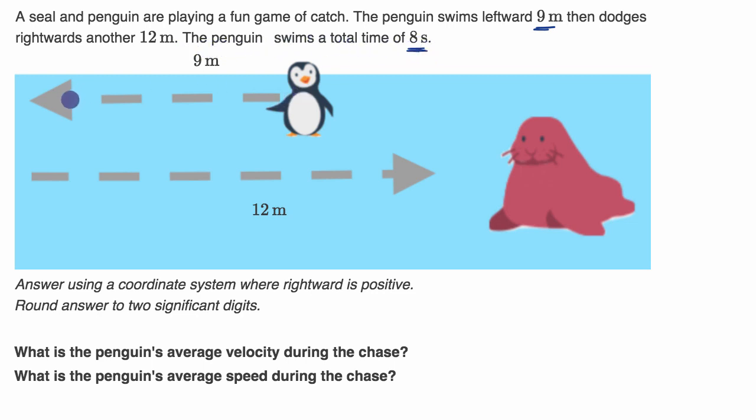So it goes to the left for nine meters, and then it goes to the right for 12 meters. What is the penguin's average velocity during the chase?